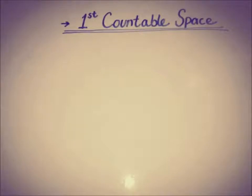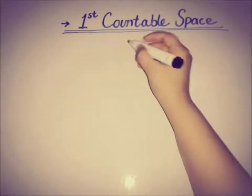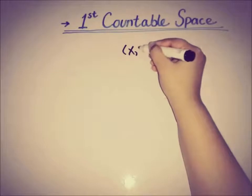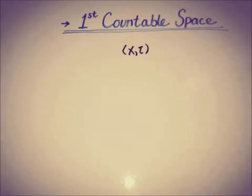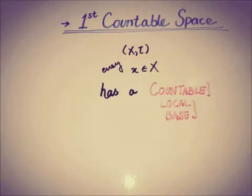So heading towards the definition: if we have a space (X, τ), then this space is said to be first countable space if every point in X has a countable local base or neighborhood base or base at X. The neighborhood base has been discussed in the previous video, that's why we were able to define the first countable space.